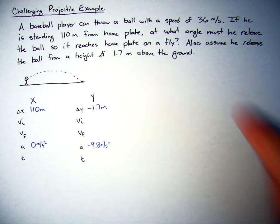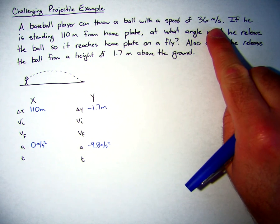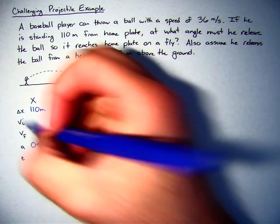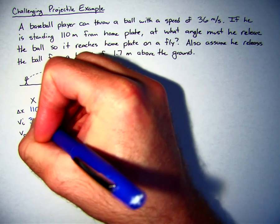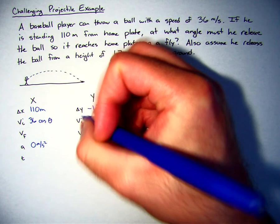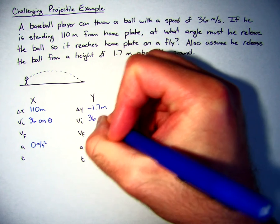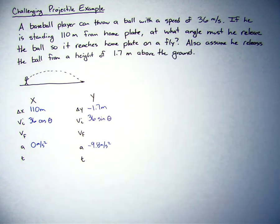The other thing we know is that the speed is 36 meters per second. We don't know the angle. So I'm going to use an initial velocity of 36 cosine of theta for the x, 36 sine of theta for the y.